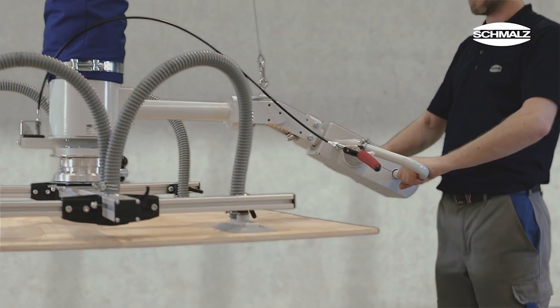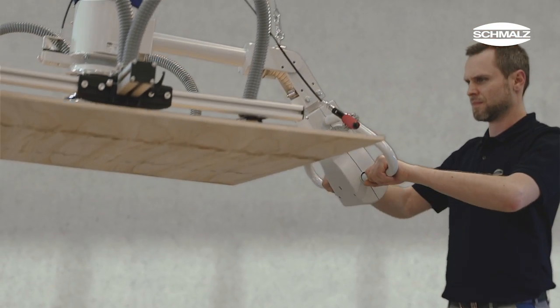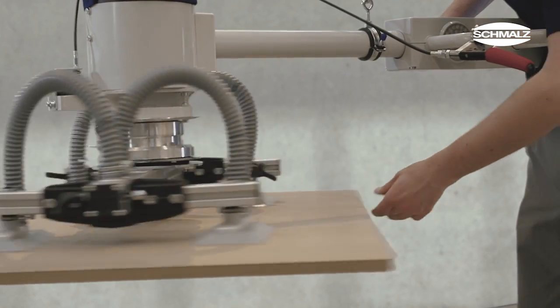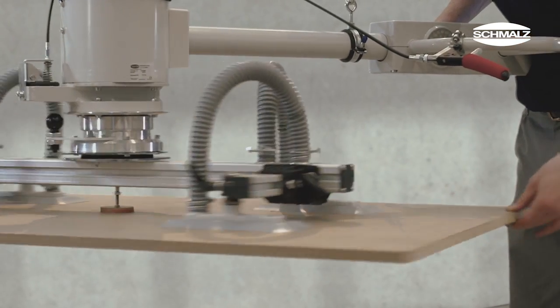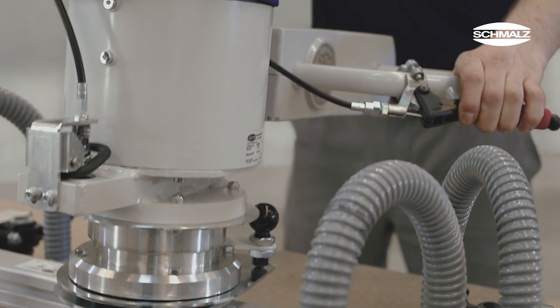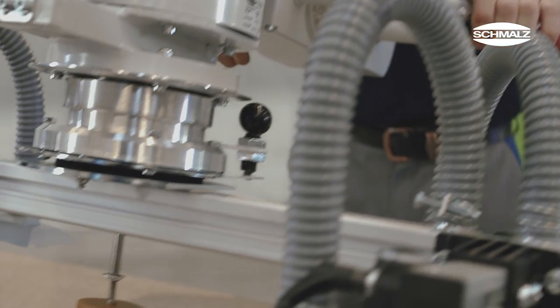Further accessories such as the pivoting operator handle for high stack heights, the rotation unit for rotating workpieces independently of the operator handle, and the venting unit for a quick release of workpieces make the Jumbo an even more versatile handling system.